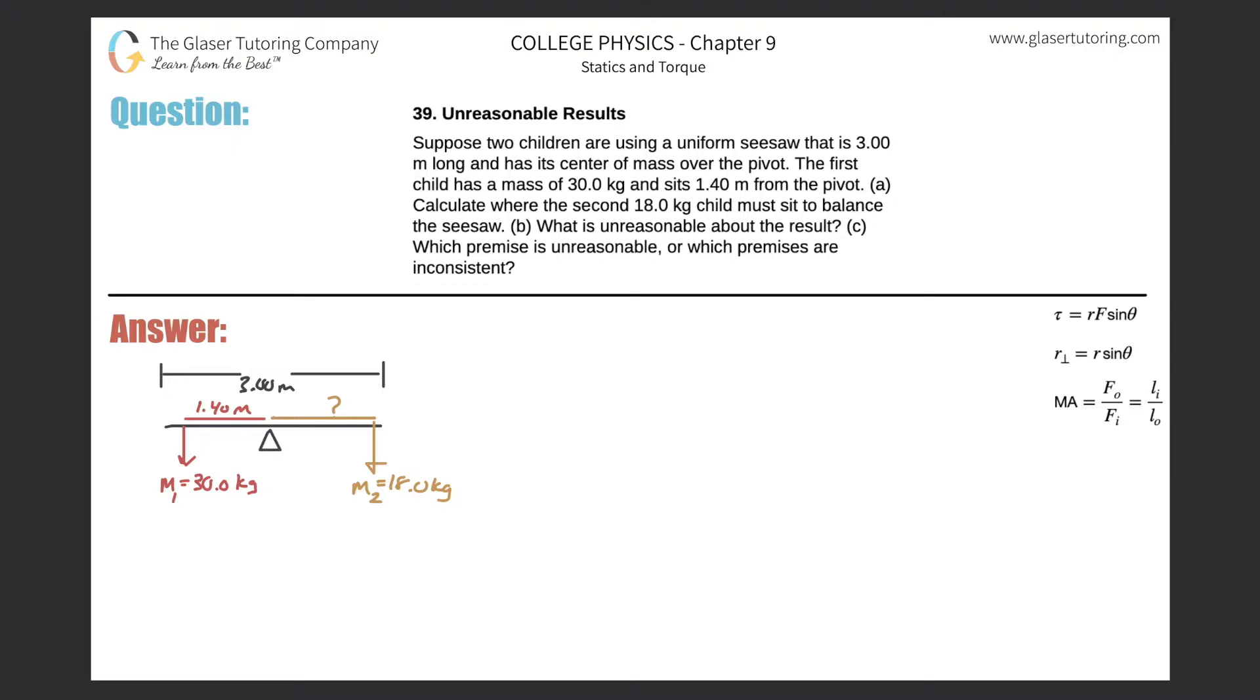Number 39. Unreasonable results. Suppose two children are using a uniform seesaw that is three meters long and has its center of mass over the pivot.